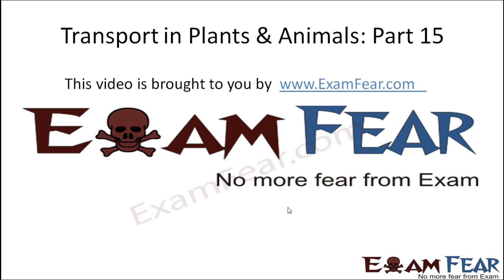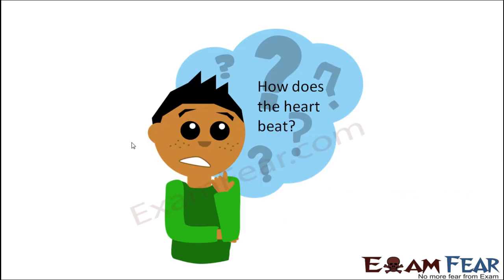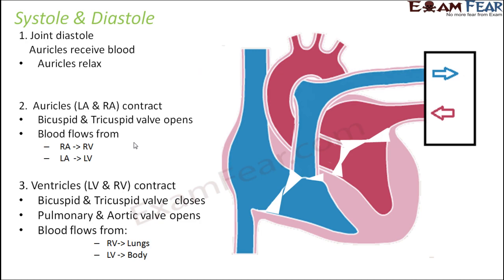This video on transport in plants and animals part 15 is brought to you by examfear.com. Now the question is: how does the heart beat? As blood flows through the different chambers of the heart — the auricles and the ventricles — they tend to contract and relax. Due to their contraction and relaxation we can feel that rhythmic contraction and expansion, which is termed as heartbeat. Let us once again look at the entire process of contraction of the auricles and ventricles during the flow of blood through the heart.